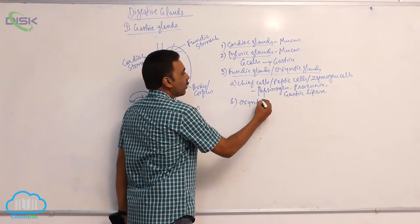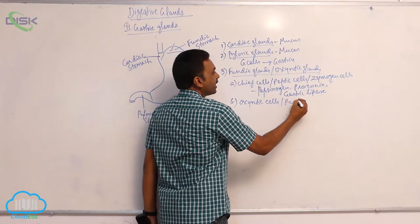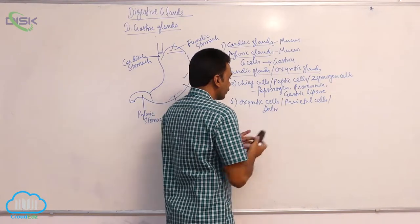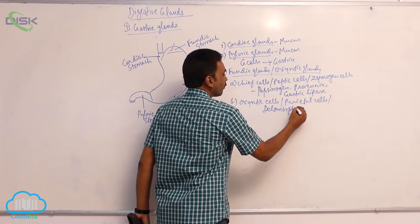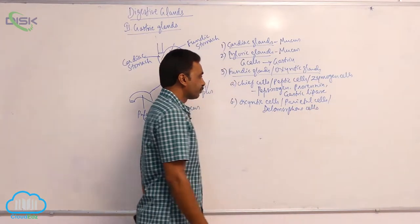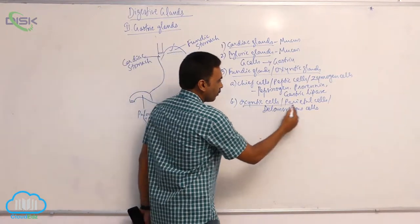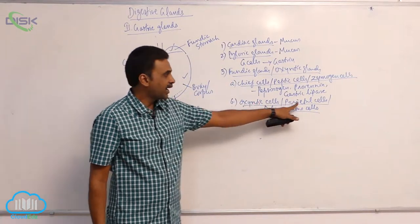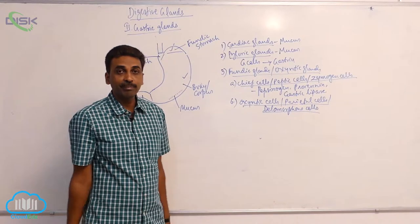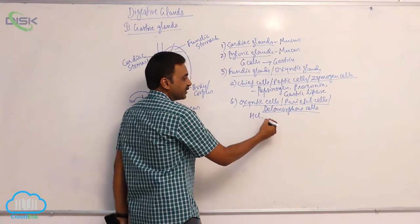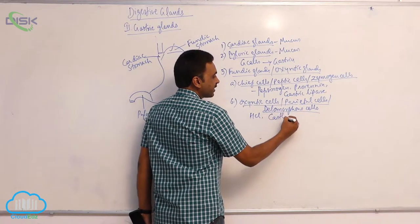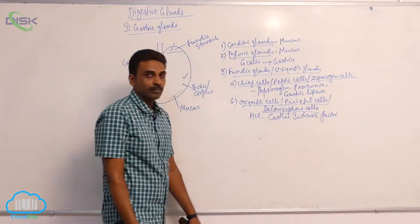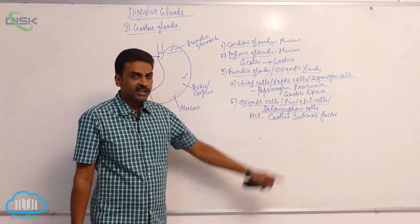Other types of cells include the oxyntic cells, also called parietal cells, also called delomorphous cells. Their secretions include hydrochloric acid and Castle's intrinsic factor.